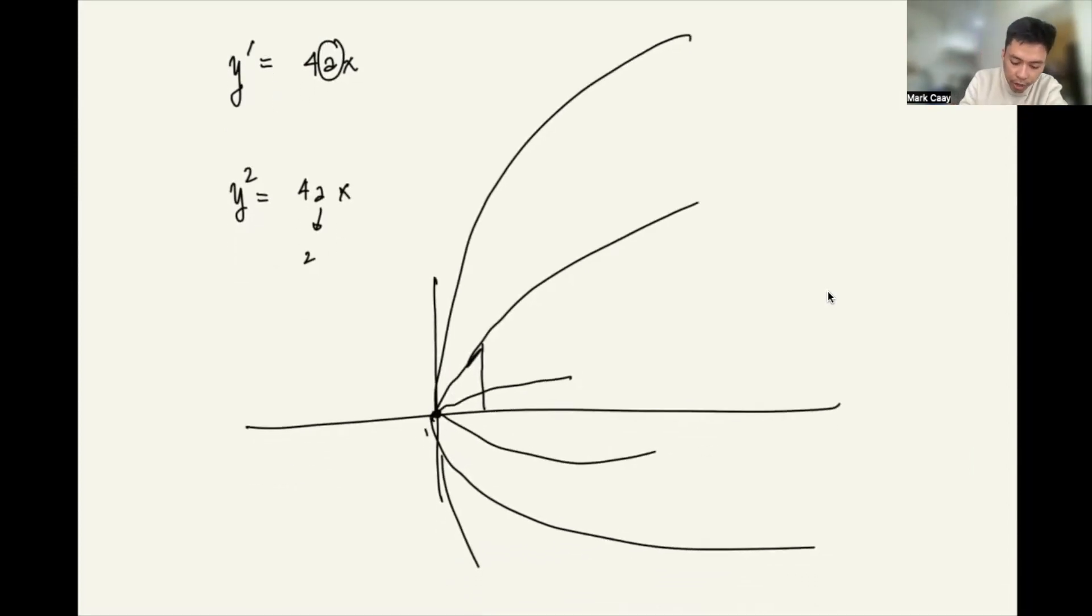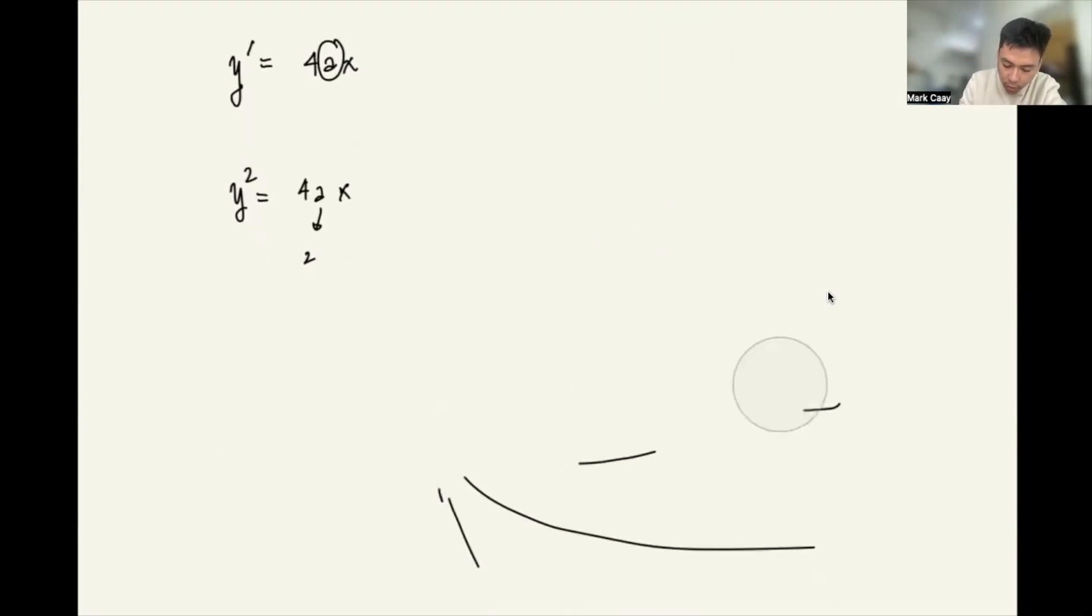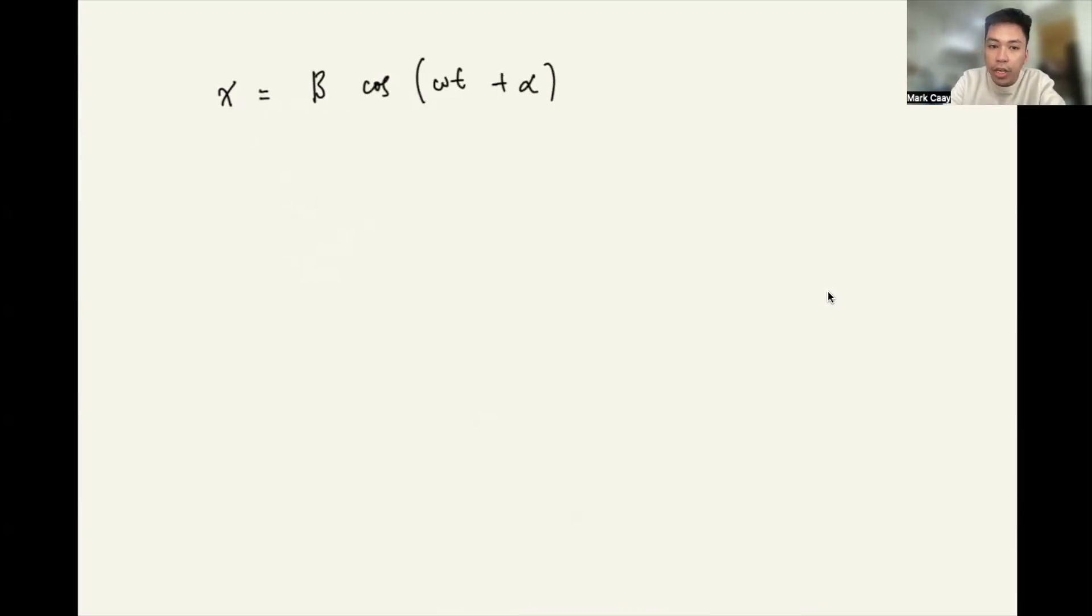So in order for us to do that, we will try to avoid the arbitrary constant in differential equations. And this is our topic for today. So let's say our equation is x = B cosine of omega t plus alpha. Remember, the B, the alpha, and the omega are constants.